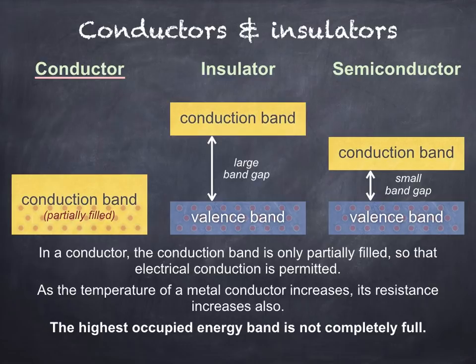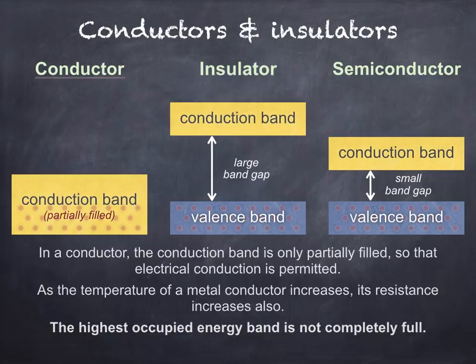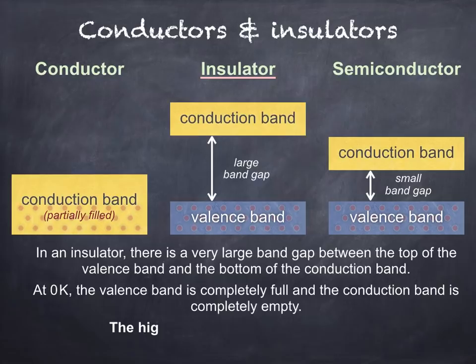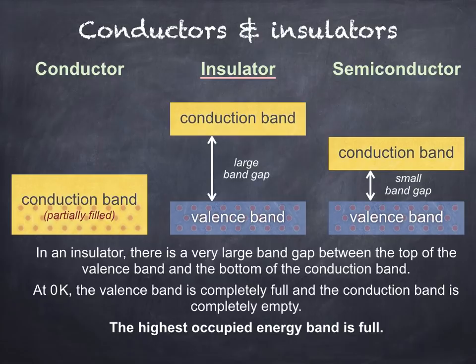Unlike a semiconductor, increasing the temperature of a metal conductor will actually cause its resistance to increase. This is because the number of electrons within the conduction band increases so much that they have less freedom of movement. Remember that in a conductor, the highest occupied energy band — the conduction band — is not completely full. In insulators, there's a very large band gap between the top of the valence band and the bottom of the conduction band. At zero Kelvin, the valence band is completely full and the conduction band is completely empty. At higher temperatures, electrons don't normally gain enough energy to jump from the valence band to the conduction band, so with no electrons in the conduction band, conduction isn't possible.